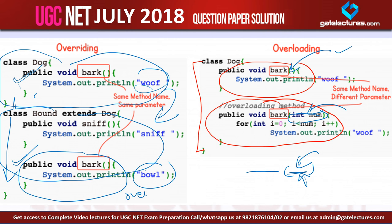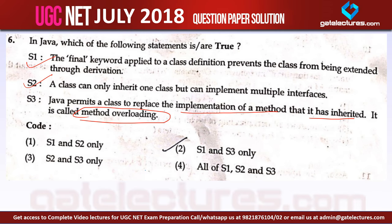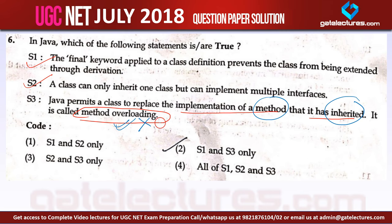But in case of overloading, the signature should be different. Now here you can see that Java permits a class to replace the implementation of a method that it has inherited — and the transcript calls it overloading, but it is not overloading. This is overriding. Java permits a class to replace the implementation of a method that it has inherited, and it is called method overriding, not method overloading.